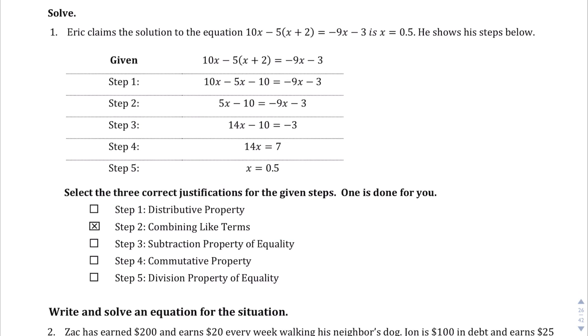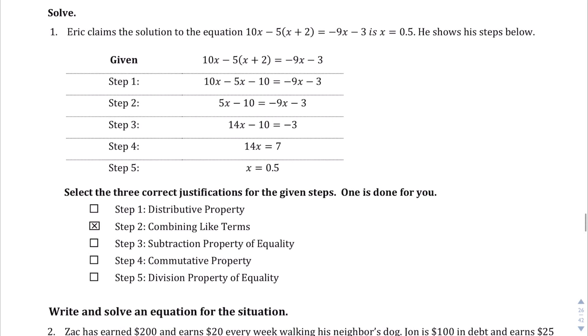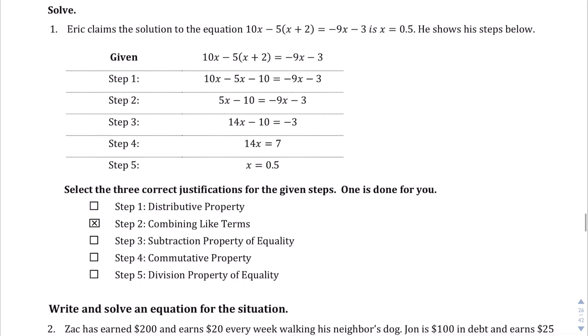We are told Eric claims the solution to the equation 10x minus 5 times x plus 2 equals negative 9x minus 3 where the solution is x equals negative 0.5. We have all these steps there. We're asked to select three correct justifications for the given steps. One is done for us. Let's take a look. Step 1. How do we get there? Clearly going from the given to step 1 they did distribute that and they did distribute it correctly. So that's a definite thing.